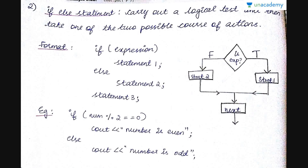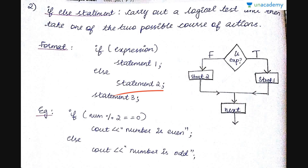Next is the if-else statement. It carries out a logical test and then takes one of two possible courses of action. Similar to if, but with an else block. If the expression is true it takes one path; if false it takes another. For example: if number modulo 2 equals zero, the remainder is zero meaning it is an even number, so you print 'number is even'; else you print 'number is odd'. For bigger statements you can enclose them within curly braces.